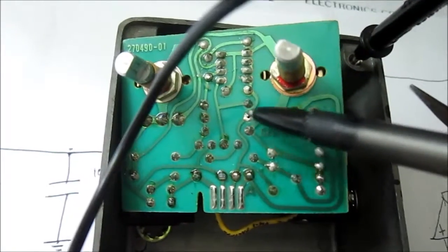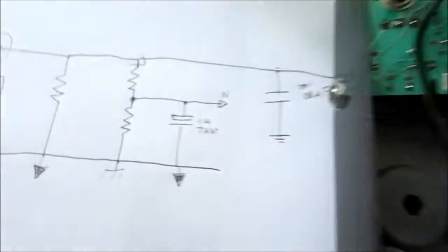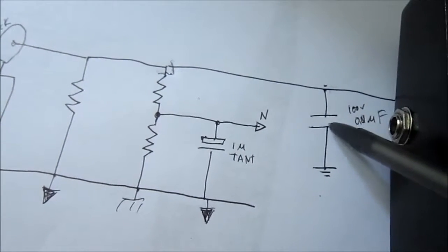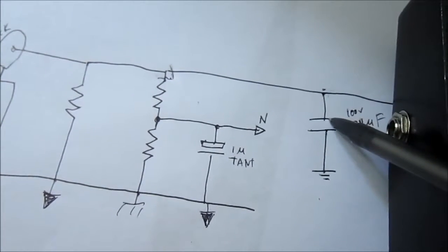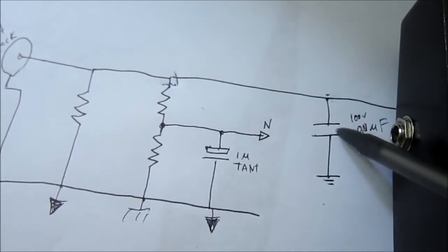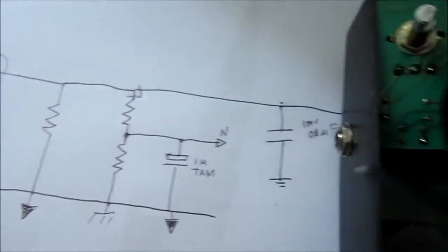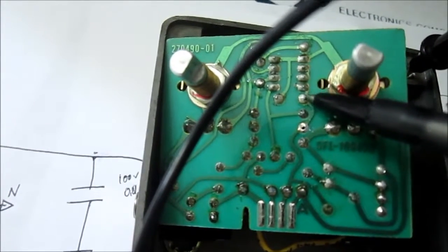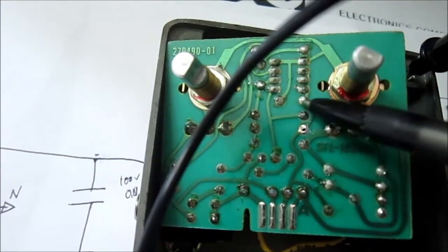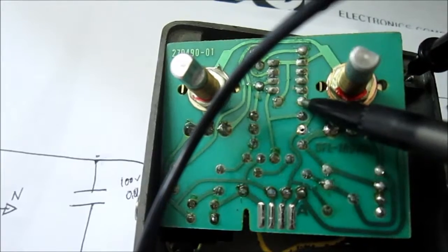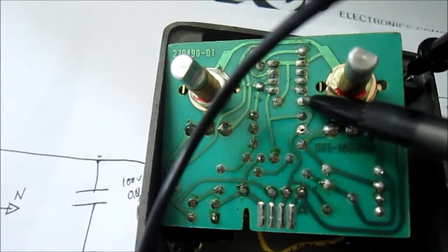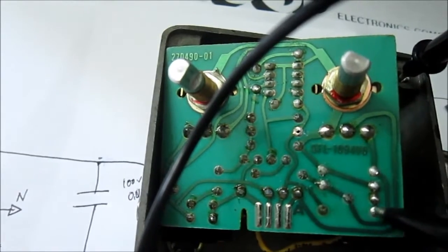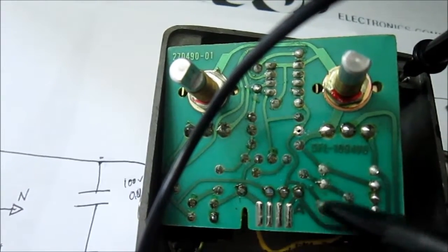So what I decided to do is, see this capacitor? It's possible I say this is the next likely suspect for a short. So we're going to unsolder this pin right here and pull that out. And see if that's where our short is. And if it's not there then we'll work on this resistor down here. So let's get cracking.